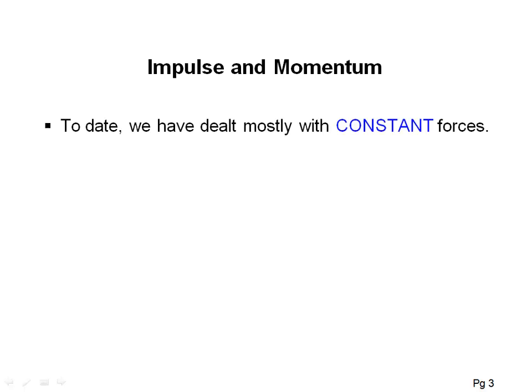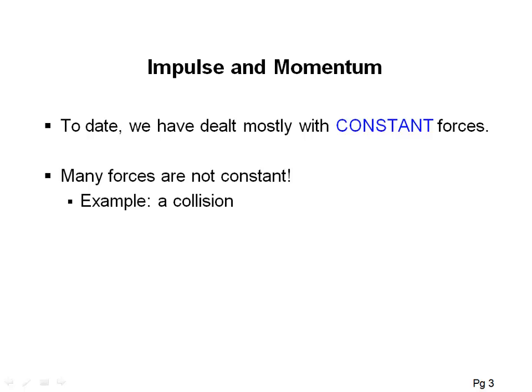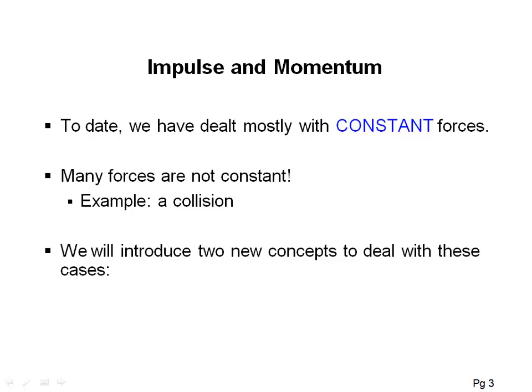Mostly we've been dealing with constant forces up to date. However, many forces are not constant. A prime example would be a collision — we're going to deal with collisions an awful lot in this chapter. Another example would be an explosion. In these cases, the forces are not constant and they're very complicated, so we're going to introduce two new concepts: impulse and the conservation of linear momentum.